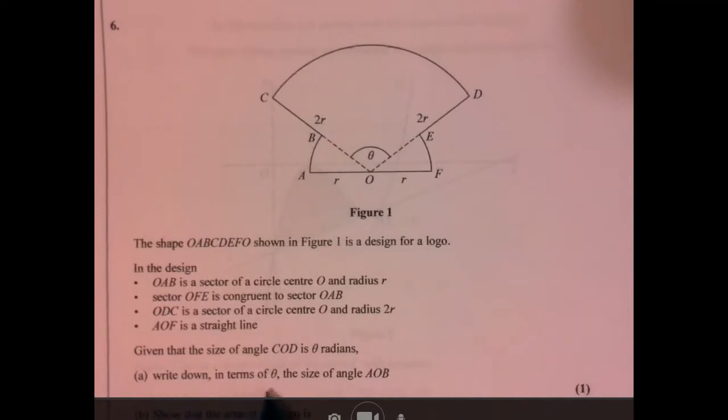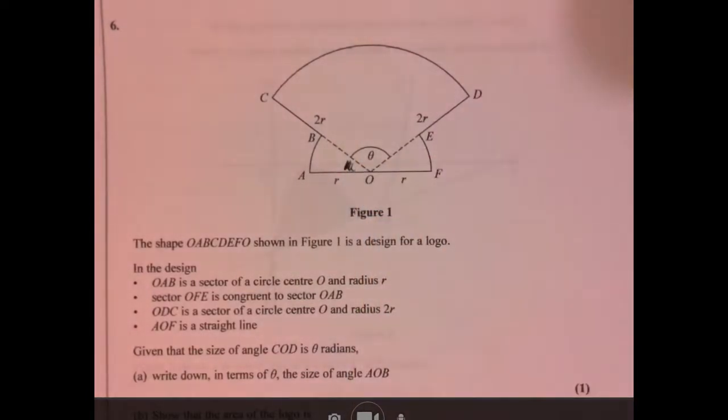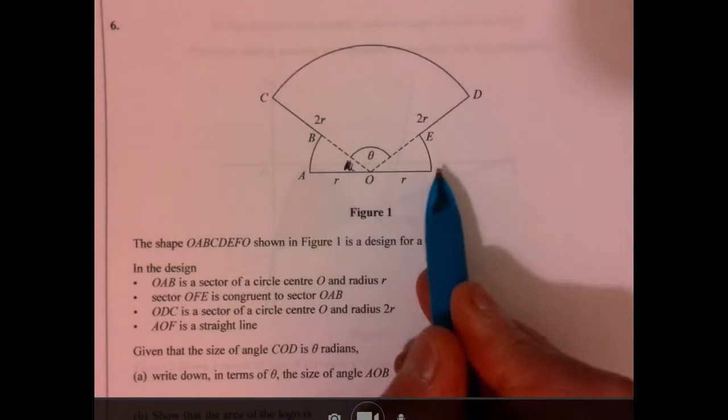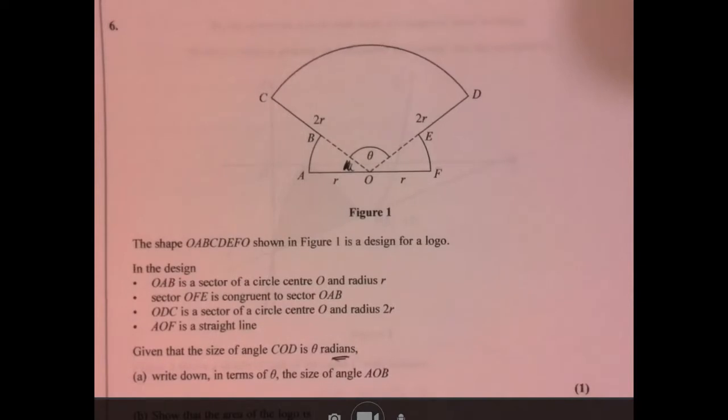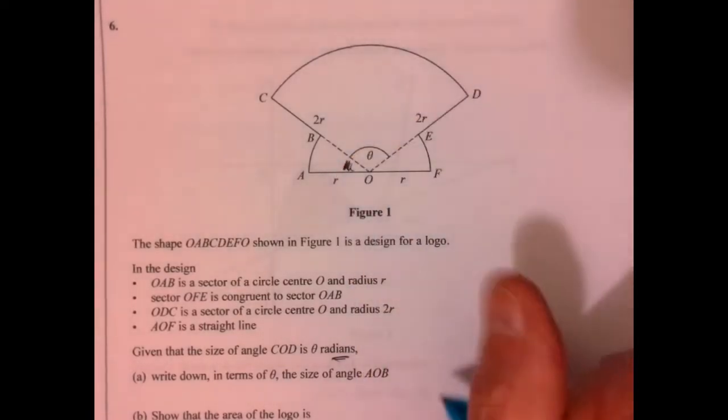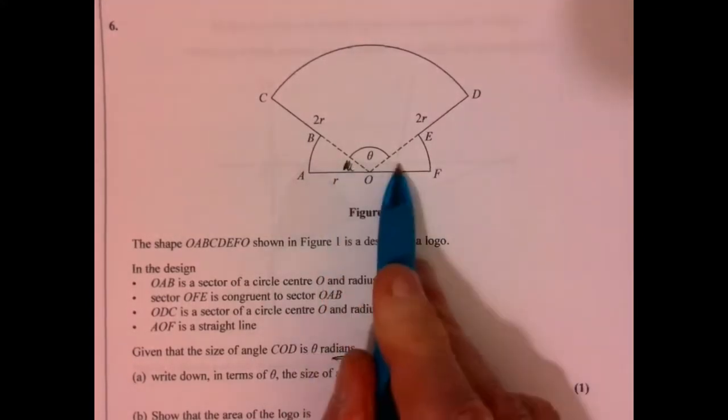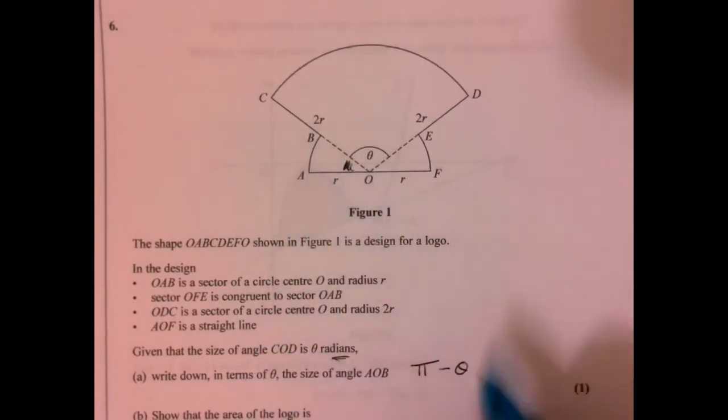Part A says write down in terms of theta the size of angle AOB. So we're talking about this angle just in here. Well, it's on a straight line here. So therefore, 180. Oh wait a minute, it's in radians. So it's not just going to be 180, talking about pi. So this bit in here has to be pi and then take away theta. That would give me these two together, but we only want AOB. So it's going to be half of that.